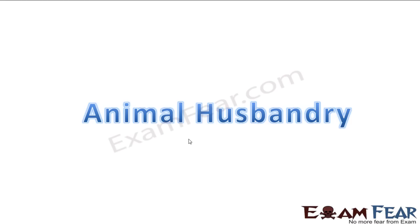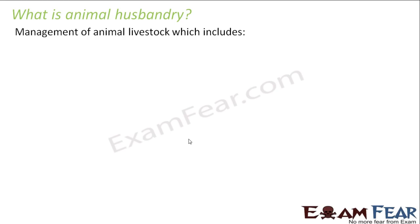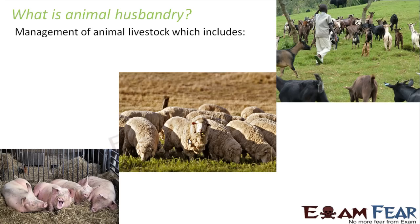So now we will talk about animal husbandry — how animals are taken care of so that they can be utilized as a source of food. Human beings need animals as a source of food, so they nurture them accordingly. In animal husbandry, we actually talk about the management of animal livestock, which includes any kind of animal.